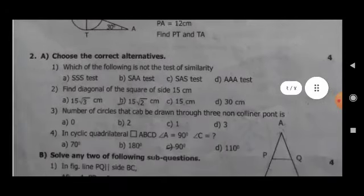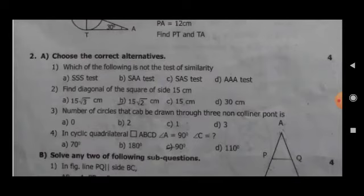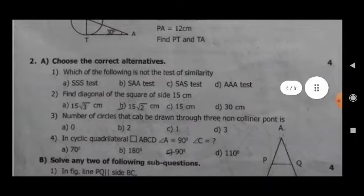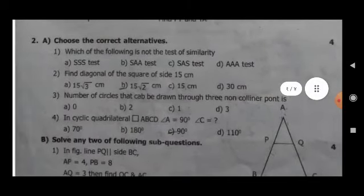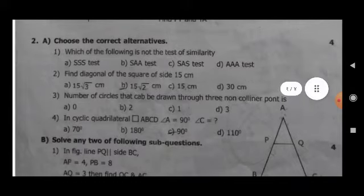Question 2 A, choose the correct alternative. For marks at 4. First, which of the following is not the test of similarity? Option A, SSS test. Option B, SAA test. Option C, SAS test. Option D, AAA test. Second, find diagonal of the square of side 15 cm. Option A, 15 root 3 cm. Option B, 15 root 2 cm. Option C, 15 cm. Option D, 30 cm.